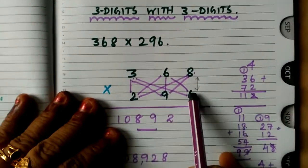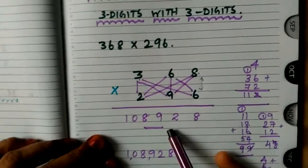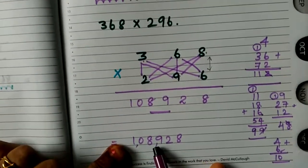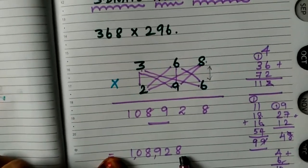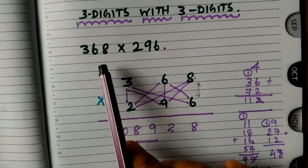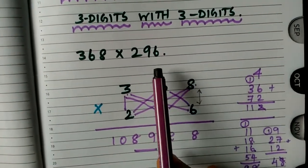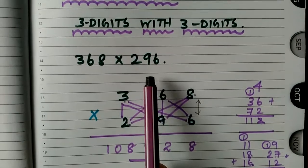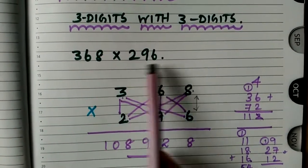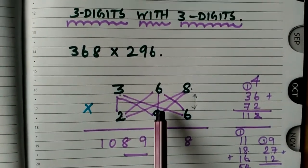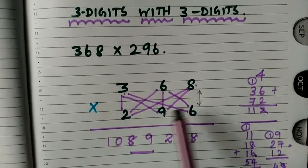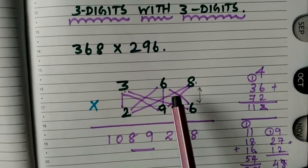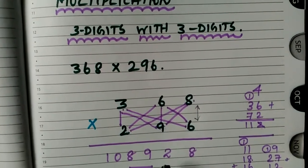By following the procedure step by step, if you are multiplying and adding properly, you will get the correct value. So 108,928. Normally, if you multiply with the normal multiplication method, it will take 5 to 7 minutes. If you use Vedic Maths, easily within 3 to 4 minutes you can do the multiplication. For 2-digit, 3-digit, or even 4-digit numbers, you can apply the same method.